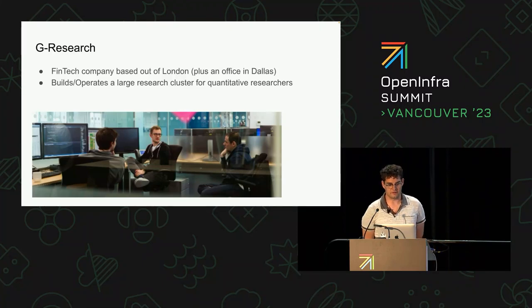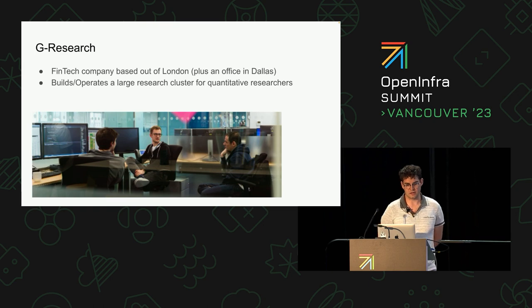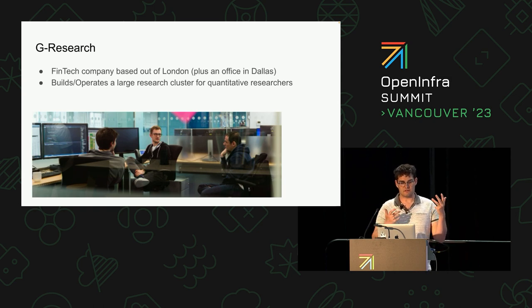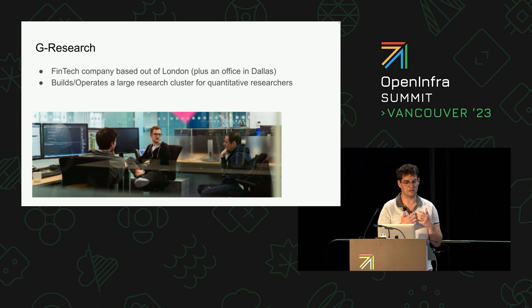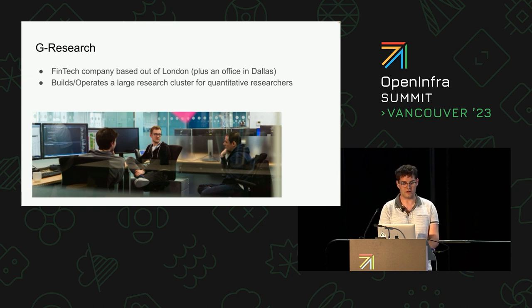Who is G Research? They're a trading company based out of London. We have a US location opened up in Dallas, and we are heavy users of OpenStack and Kubernetes. We have quite a few job postings available in the Dallas metro area around OpenStack and infrastructure. G Research provides to quantitative analysts — since it's a trading company, you can imagine we're trying to predict trends in the stock market — a really large research cluster for quants to figure out trends. That can mean anything from data engineering to machine learning to running ML simulations faster. We provide a really wide range of use cases.